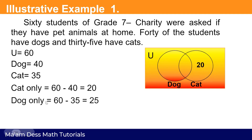Next, for dogs only — to find the number of dogs only, we subtract again: 60 minus 35. The 35 is the number of cats. The answer is 25. So 25 are the students with pet dogs only. We put it on the left side of the Venn diagram.